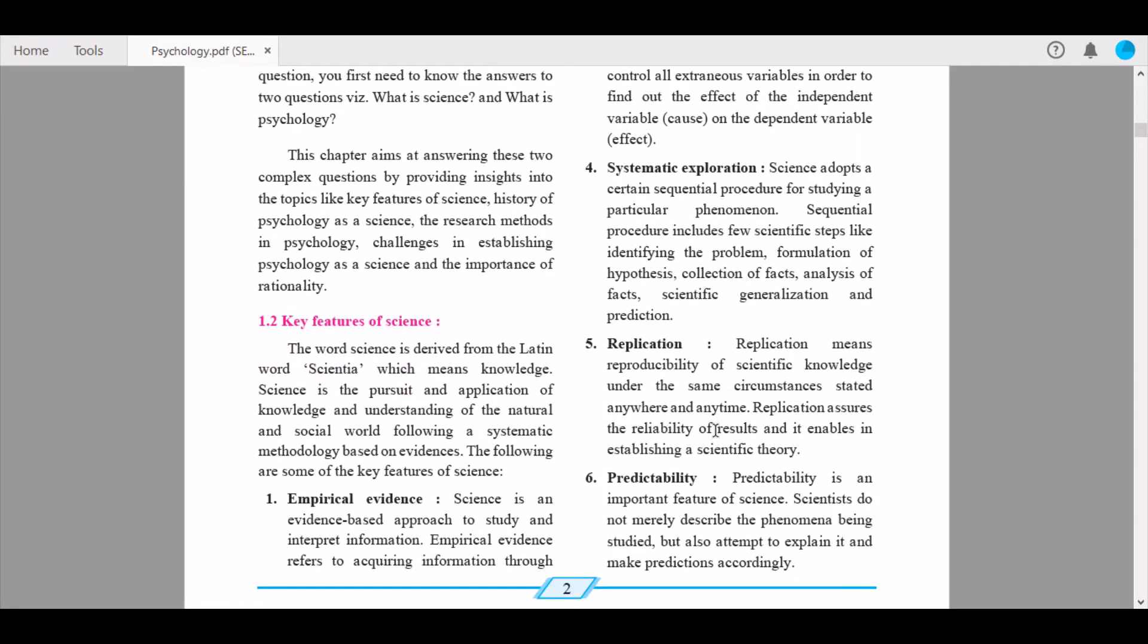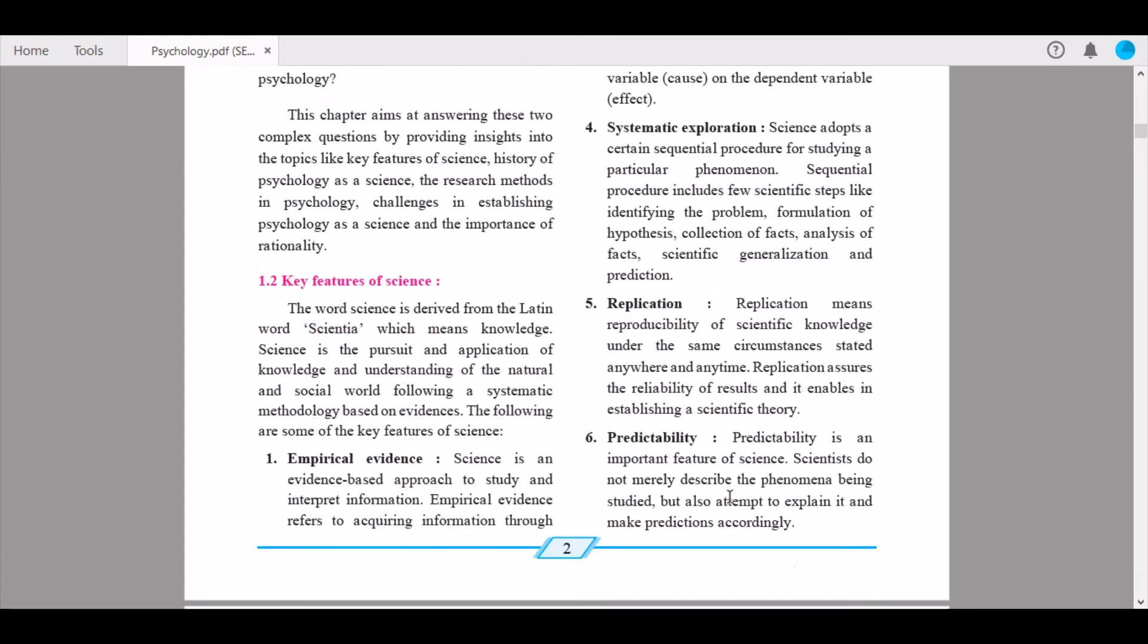Sixth is predictability. Predictability is an important feature of science. Scientists do not merely describe the phenomena being studied but also attempt to explain it and make predictions accordingly. Scientists test the accuracy so that it can be given out to the public and they can check the accuracy as well, so we know that the phenomena is true and works.